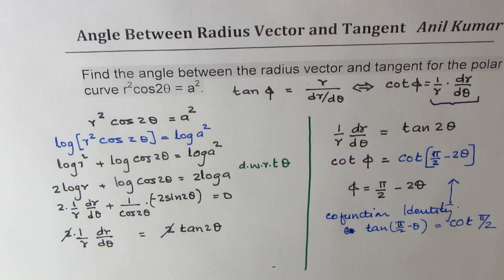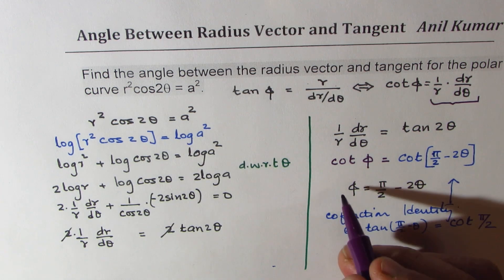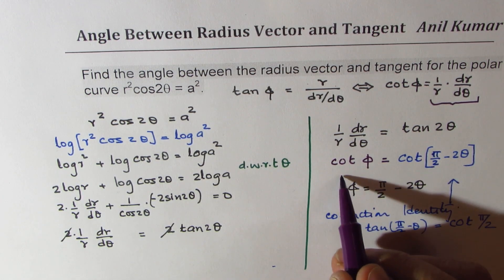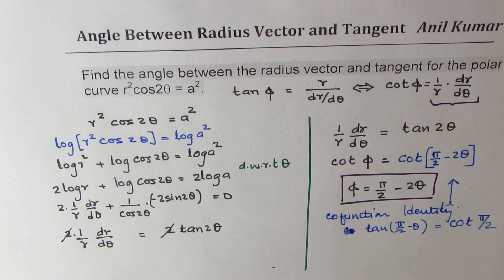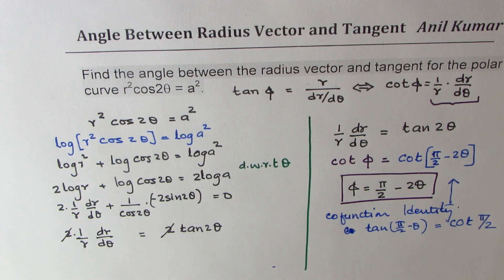So that gives you the answer. And so the result is that the angle between the radius vector and the tangent is π/2 - 2θ. Perfect. So that is how such questions can be solved.